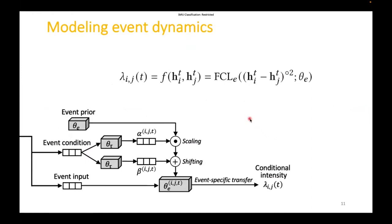The key to materialize the conditional intensity is to fit a transfer function f on top of the temporal GNN layers. More specifically, we use a fully connected layer, FCL, that is as follows, where theta e denotes the parameters of the fully connected layer. The input is an element-wise square which tends to achieve better empirical performance. Lastly, the FCL e employs a sigmoid activation to ensure the transfer function is positive.